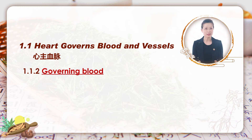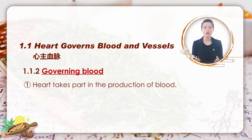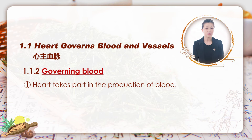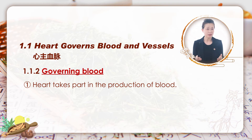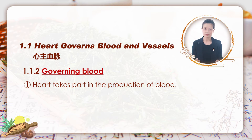The first implication is that heart takes part in the production of blood. In TCM theory, when nutrition — known as essence in TCM — is transported and transformed by the spleen, some very nutritious part is sent to the heart. By the reddening function of heart, together with other very complicated processes, blood is produced. Therefore, heart takes part in the production of blood.